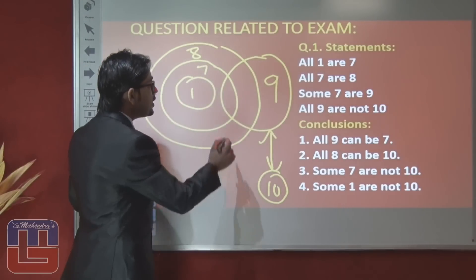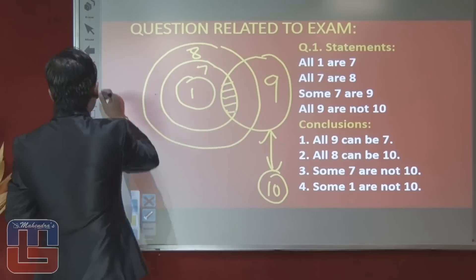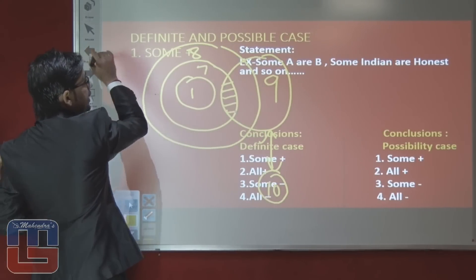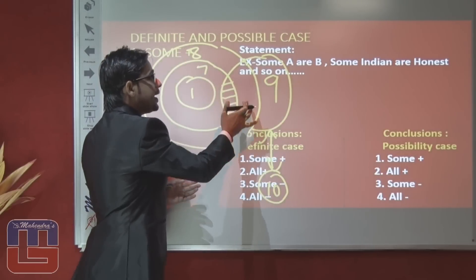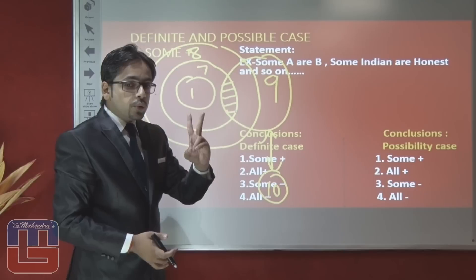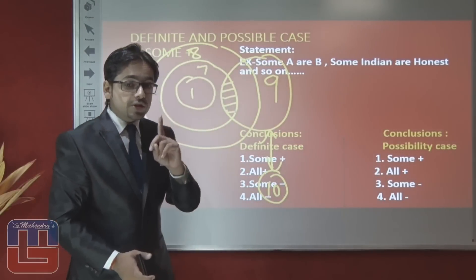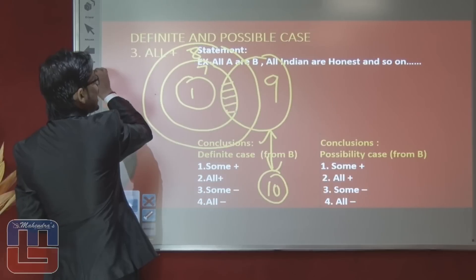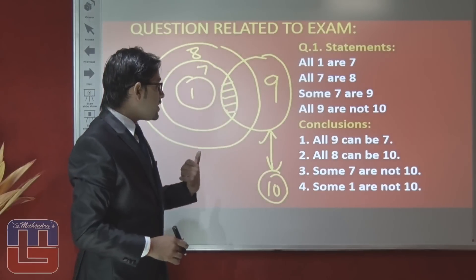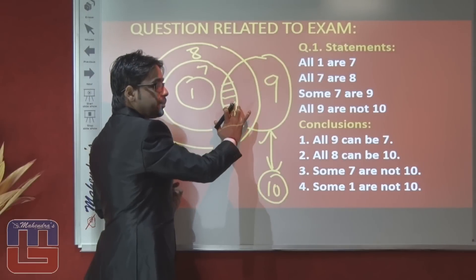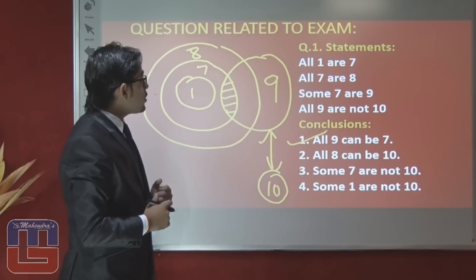Conclusion 1: 'All 9 can be 7' — there is some positive relation between 9 and 7. In the case of some positive, only two possibilities are followed: all positive and some negative. Here the examiner asks about all positive possibility, so yes, all 9 can be 7 is a possibility — true. Conclusion 2: 'All 8 can be 10' — there is a direct relation between 8 and 10 through 9; since all 9 are not 10, some 8 are definitely not 10. So how can it be possible that all 8 can be 10? Answer is false.